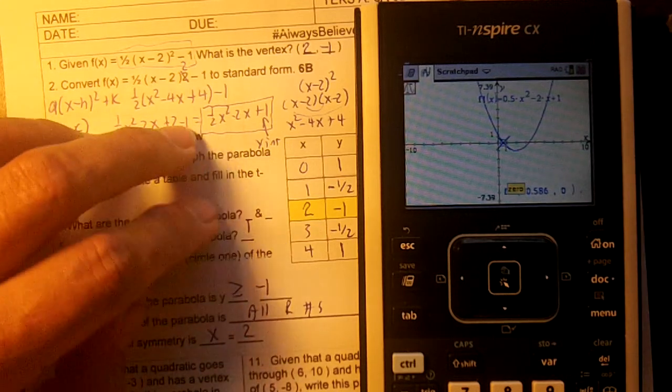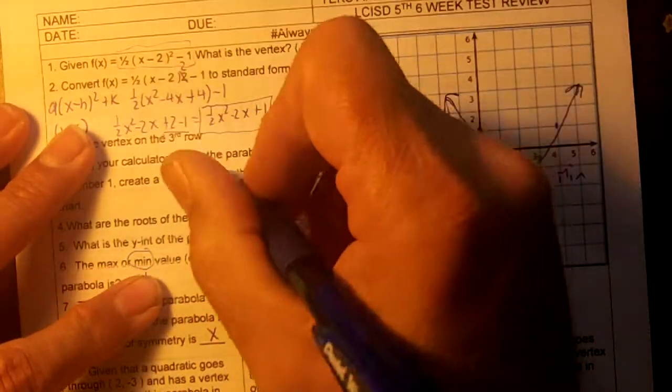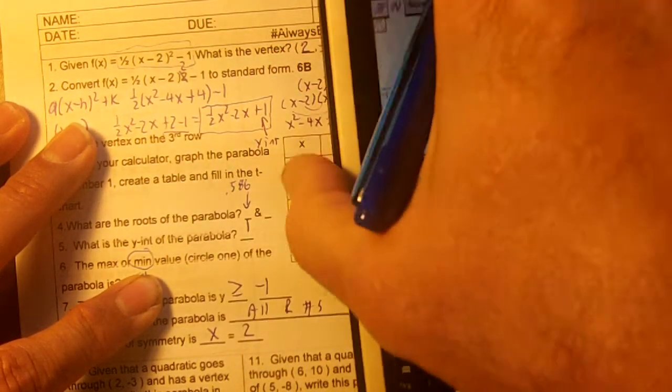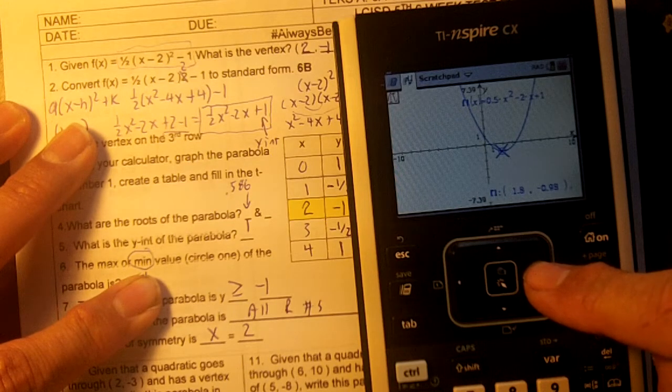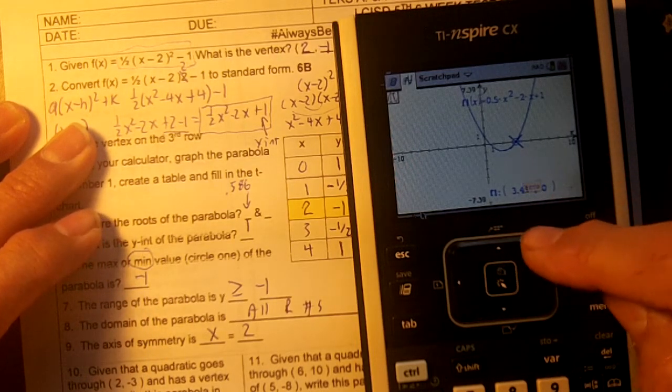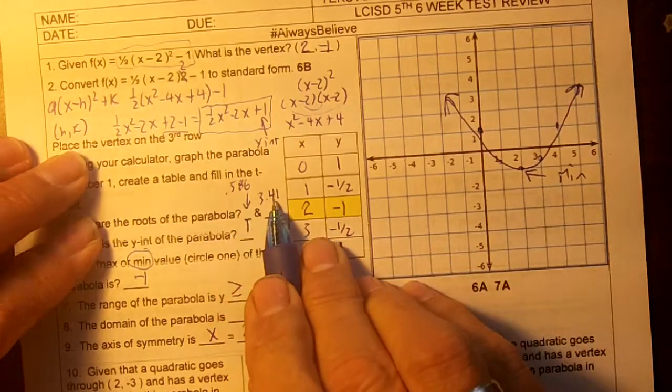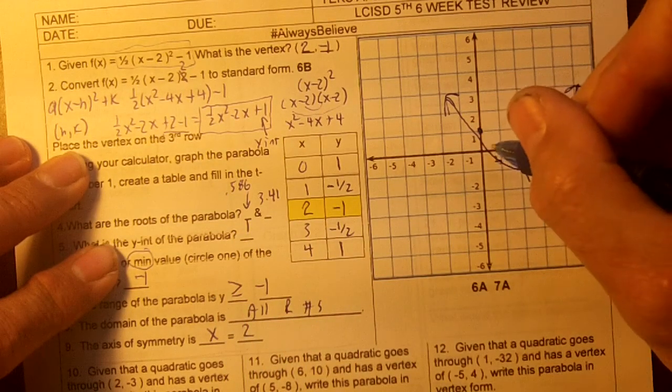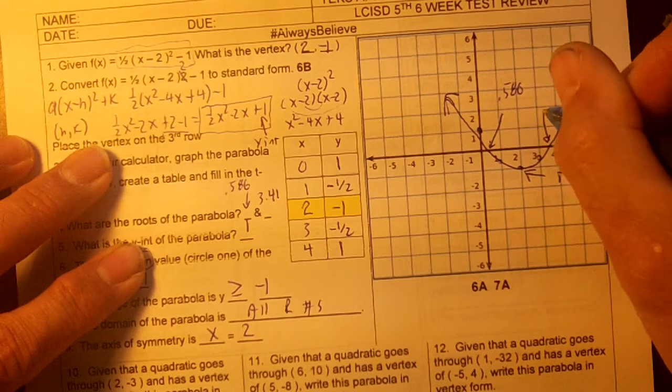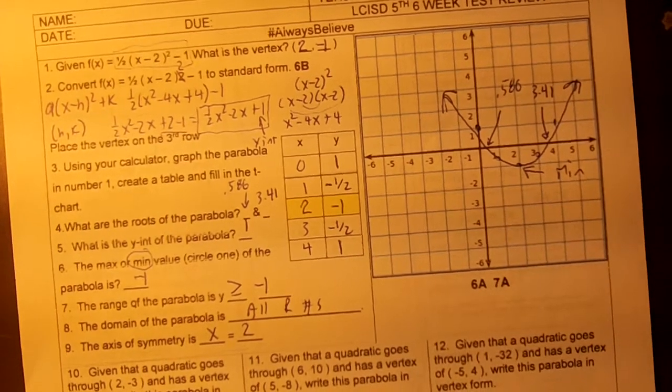There is our zero. And the zero is, what does it say? 0.586. So 0.586 would be the zero. It's going to be 0.586 is one of them. And let's keep tracing to the right to get the other one. There's the other zero. And it's 3.41. 3.41. So our two zeros are 5.86 and 3.14. Remember, you just trace and get those zeros. So right here would be 5.586. And right here would be 3.41. Those would be the two zeros.